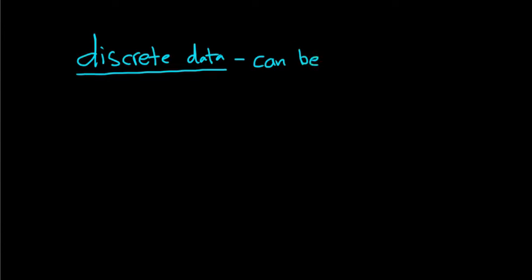In this video we're going to talk about two more types of data. The first is called discrete data. So the definition of discrete data is that it can be counted. You can count the data.